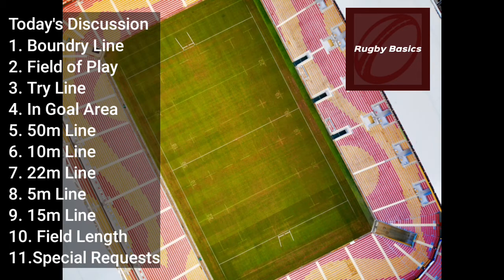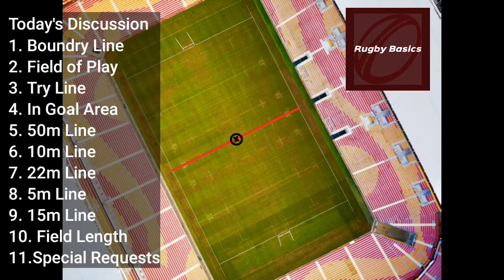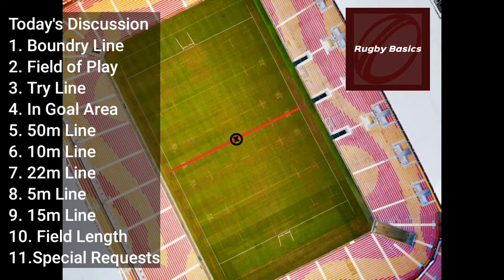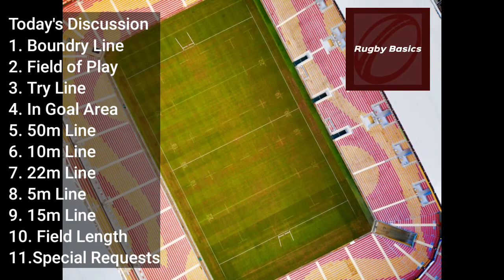The next line is the 50-meter line. This line divides the rugby field into two halves. At the center you will see a circle with a cross — that X marks the spot where the game is restarted and the kickoff takes place.